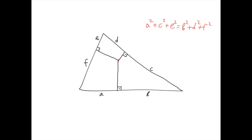If we choose three points, one on each side of the triangle, and it turns out that these six segments satisfy this property, then the perpendiculars from each point to the side on which it lies — these three perpendiculars intersect at a single point.